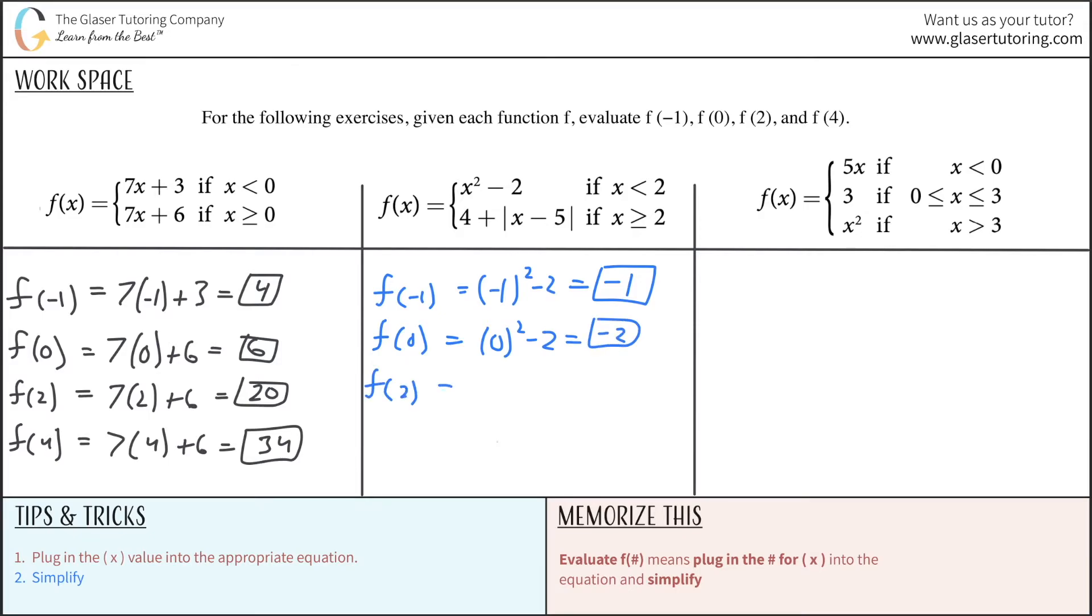How about f of now positive 2? Now you have to now shift your attention to the second equation. Why? Because 2 falls under that constraint. This is saying to use this equation if and when x is greater than or equal to 2, and we do have the value of 2 this time.